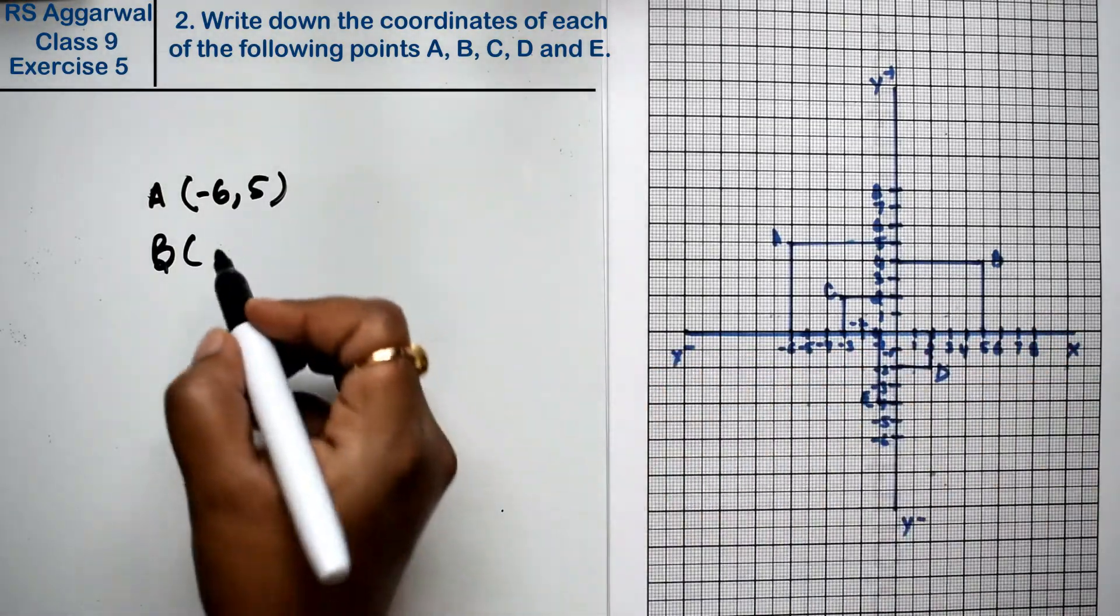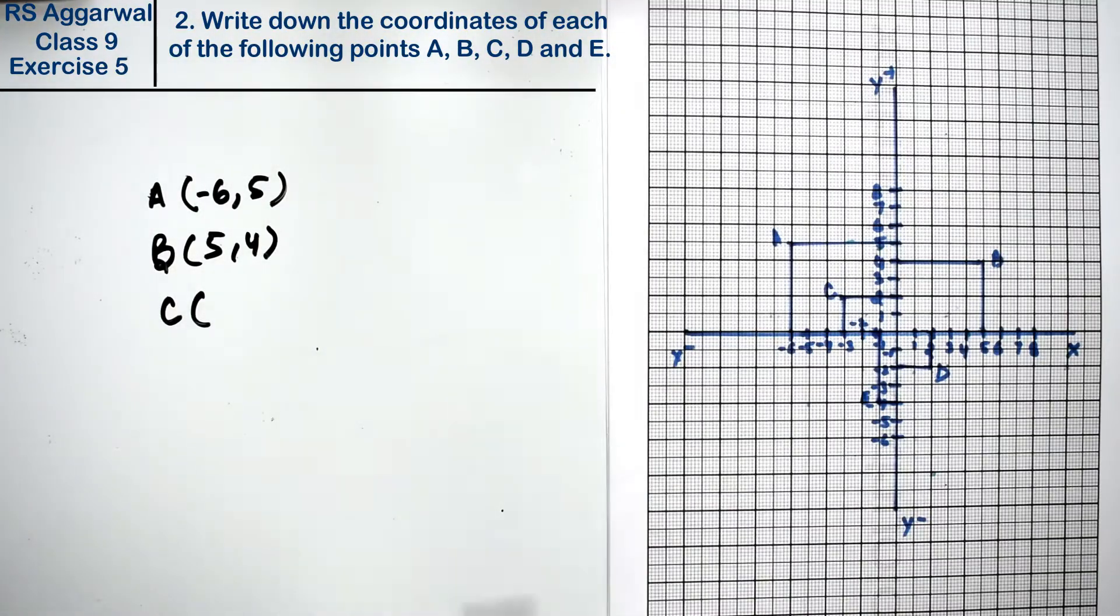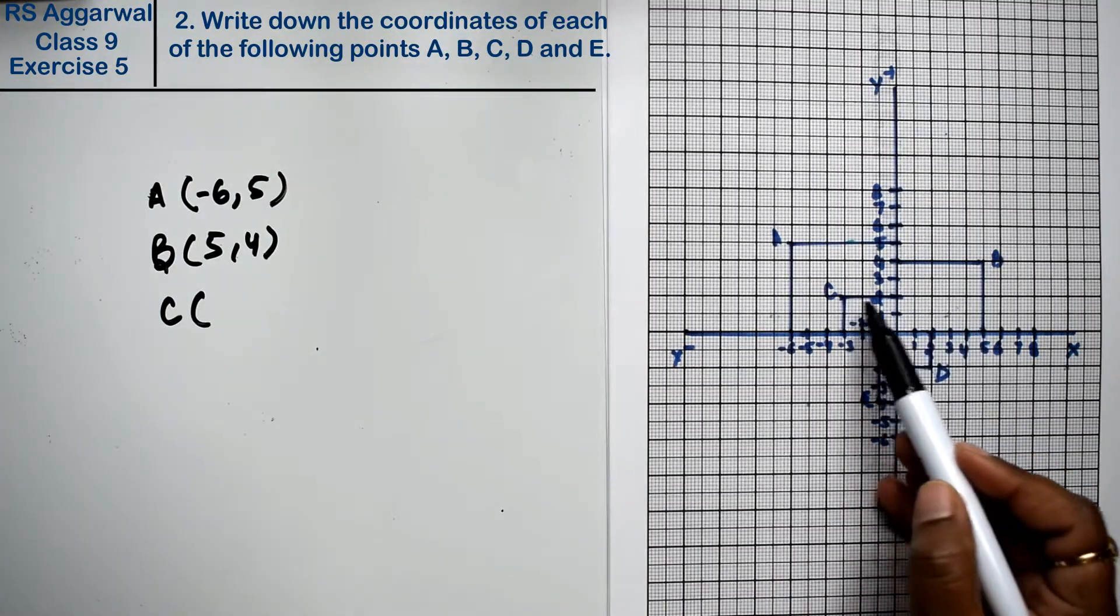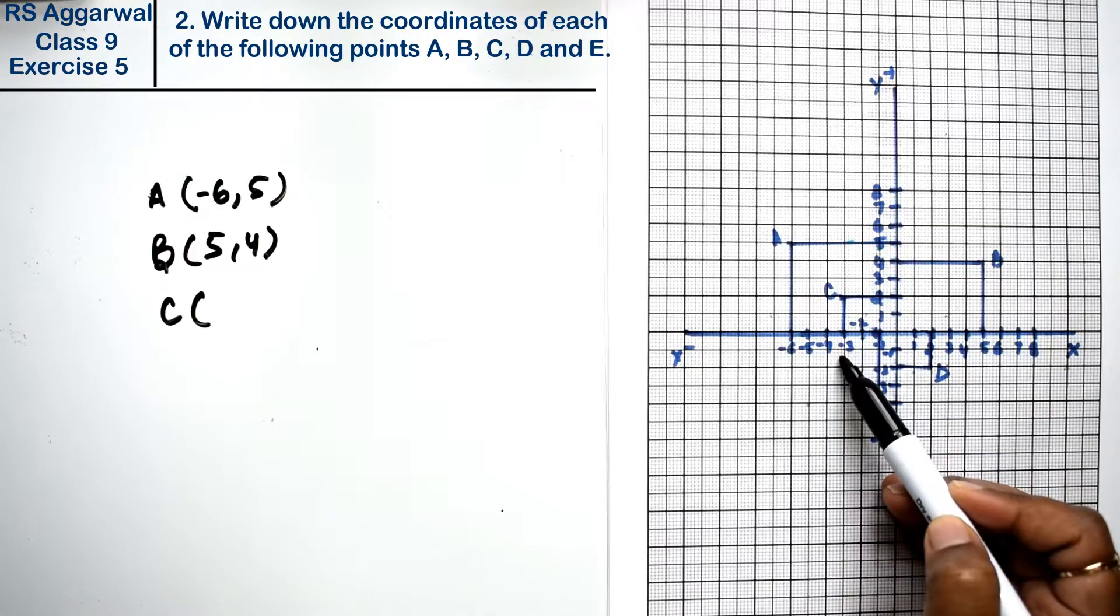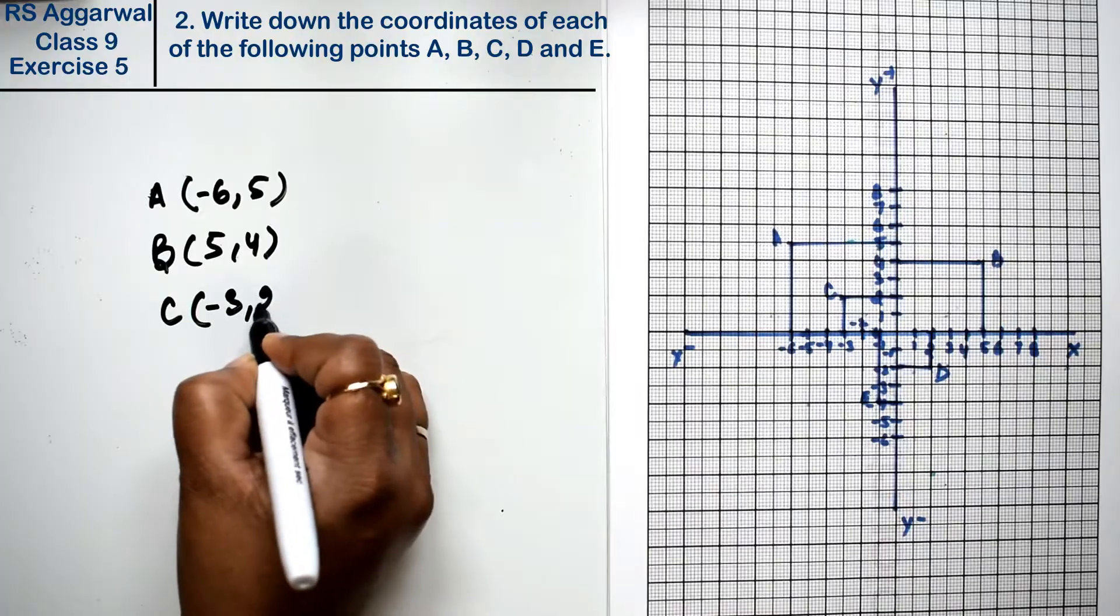See where is C, where is C. C is this. Look at X first, look at minus 3 and Y 2. So minus 3 and 2.